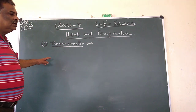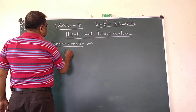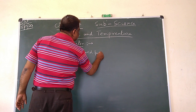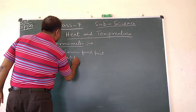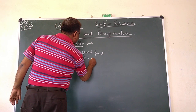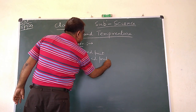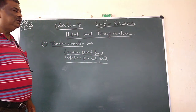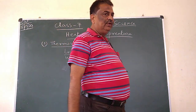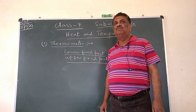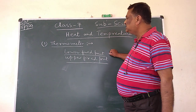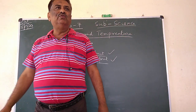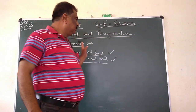A thermometer has two things: lower fixed point and upper fixed point. Lower fixed point is the temperature at which pure ice melts or pure water freezes. Upper fixed point is the boiling point of pure water.